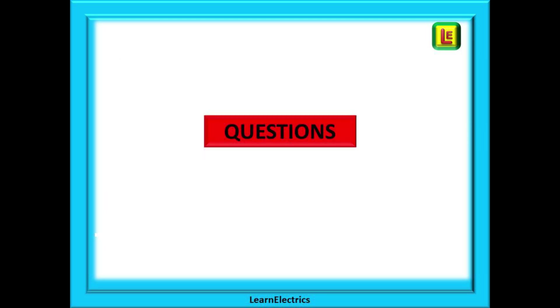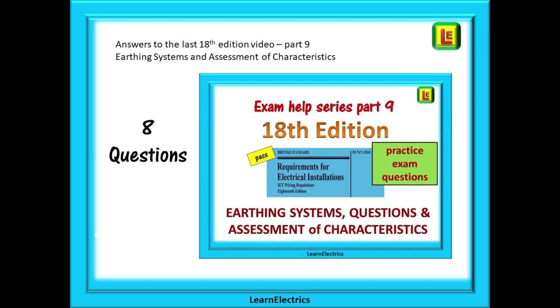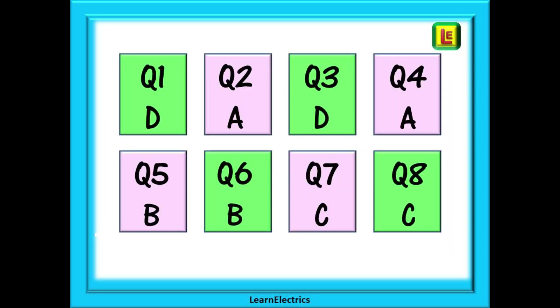We can look at some questions now. We can begin as always with the answers to last week's 18th edition exam help session number 9: Earthing systems and assessment of characteristics. Here are the answers. They should have been easy to find. Just make sure that you read the question and remember that for many questions you are just word matching sentences or phrases. There will only be one answer that is the most appropriate so please read carefully.